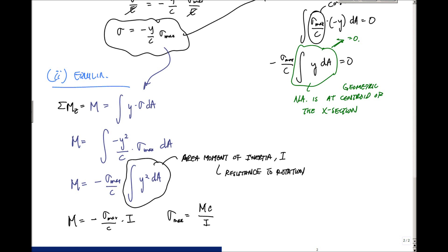When looking for the maximum value, we usually just need the absolute value: sigma max equals Mc over I. In general, the more important equation is sigma equals minus My over I — I call this the most selfish equation in the world because it's 'my I' and it's negative. This is our flexure formula, which is very important to know for any mechanics, stress analysis, or design work anytime you're dealing with bending moments.